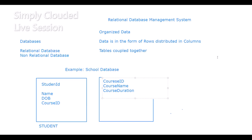Now how is the relationship defined? Let's say there are 500 students. Two students can have the same name, the same date of birth, and even the same course ID, but never will two students have the same student ID. So it is safe to assume that student ID — I'll underline this — will act as a unique identifier. It will identify individual values in this table.